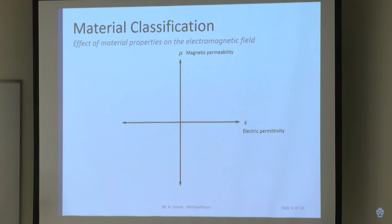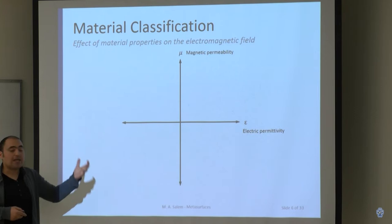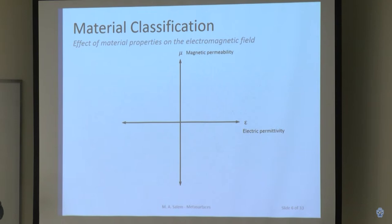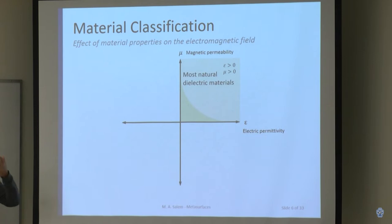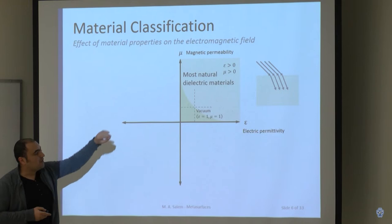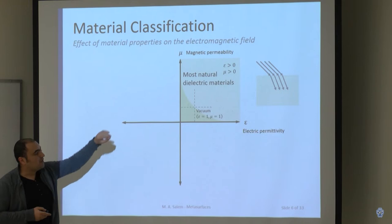There is electric field and magnetic field. We describe the way a material interacts with the electric field by the electric permittivity, denoted epsilon, and the way it interacts with the magnetic field by the magnetic permeability. For most natural materials, they fall in the first quadrant where both the magnetic permeability and the electric permittivity are positive — this is wood, glass, water, pretty much all the natural dielectrics. A particular case is where permittivity equals one and permeability equals one — that's vacuum.